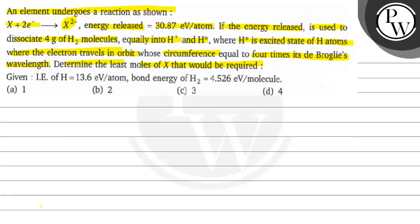Given data: Ionization enthalpy of hydrogen = 13.6 electron volt per atom. Bond energy of hydrogen = 4.526 electron volt per molecule.